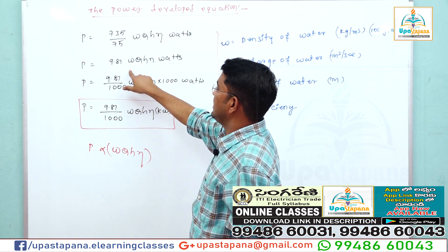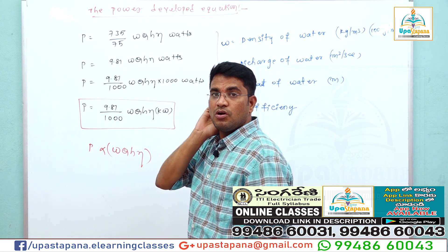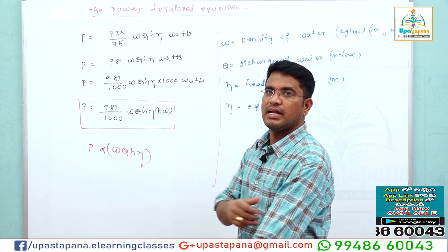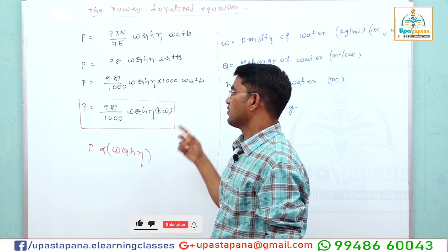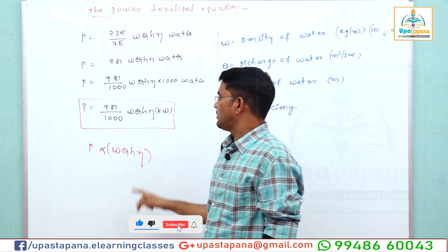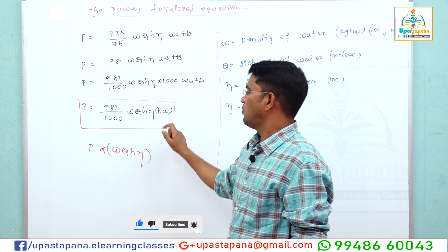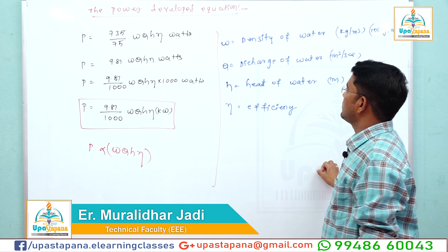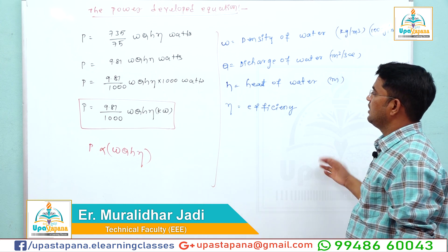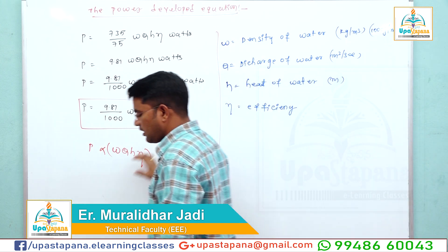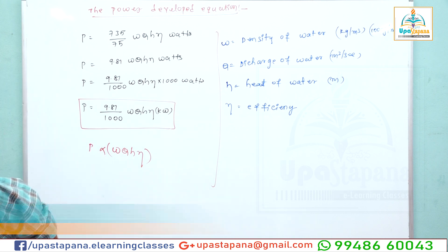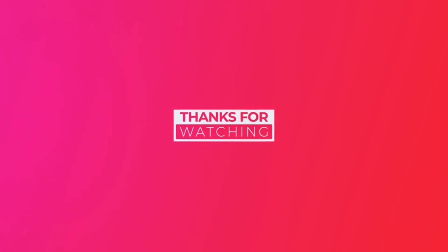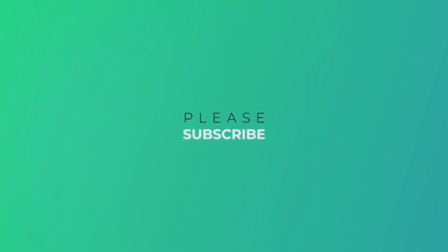The power developed equation in the hydel power plant is: P = 9.81/1000 × W × Q × H × η kilowatts. Where W is the density of water, Q is the discharge of water, H is the head of the water, and η is the efficiency. This is the power developed equation.